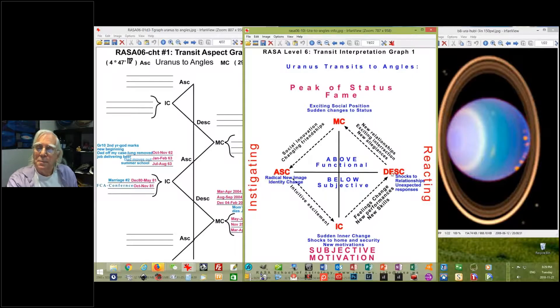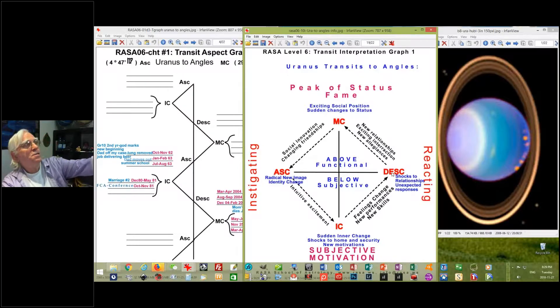By the time it hits the descendant, it's going to change your relationships and shock your responses. At the ascendant you're projecting out - that's changing and pushing the projection. At the descendant it's changing the reaction to other people. Often other people shock you, but you're changing the way you respond to them.